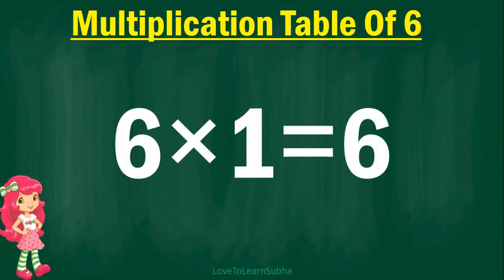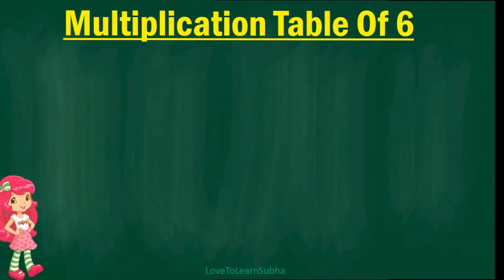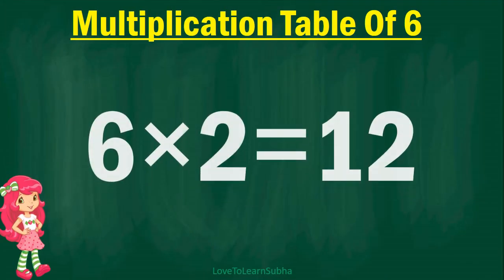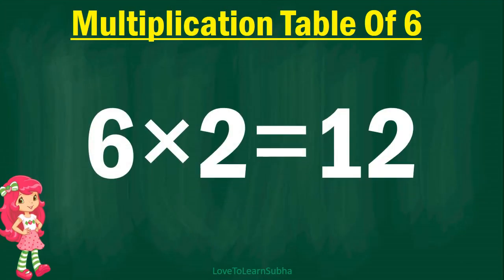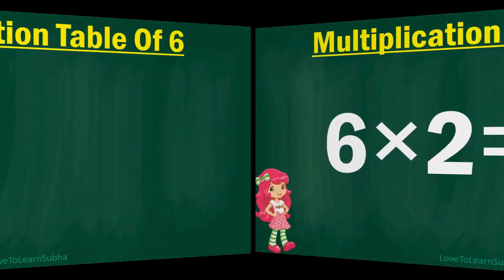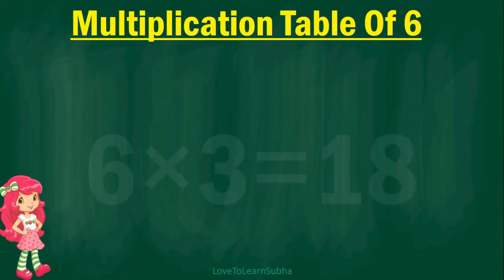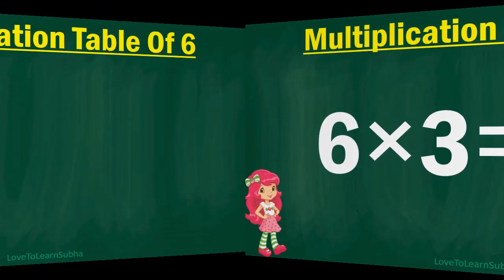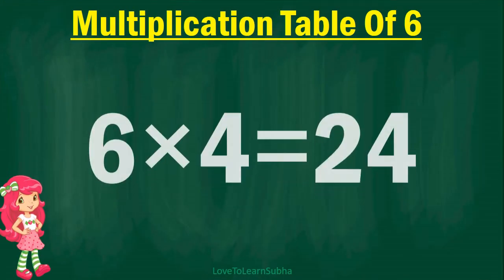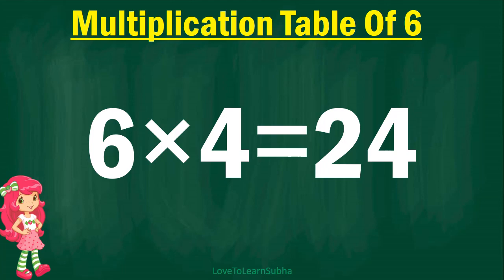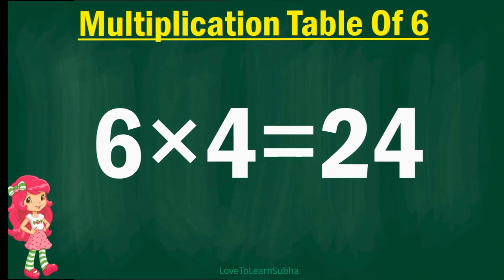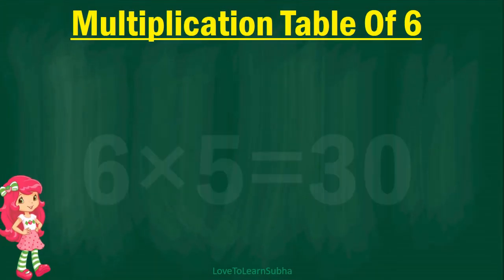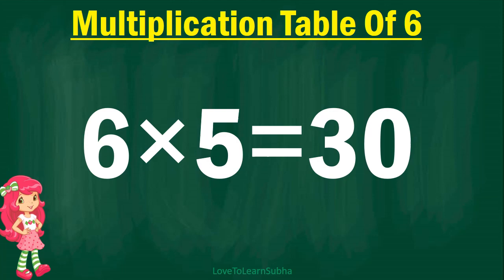6 ones are 6, 6 twos are 12, 6 threes are 18, 6 fours are 24, 6 fives are 30.